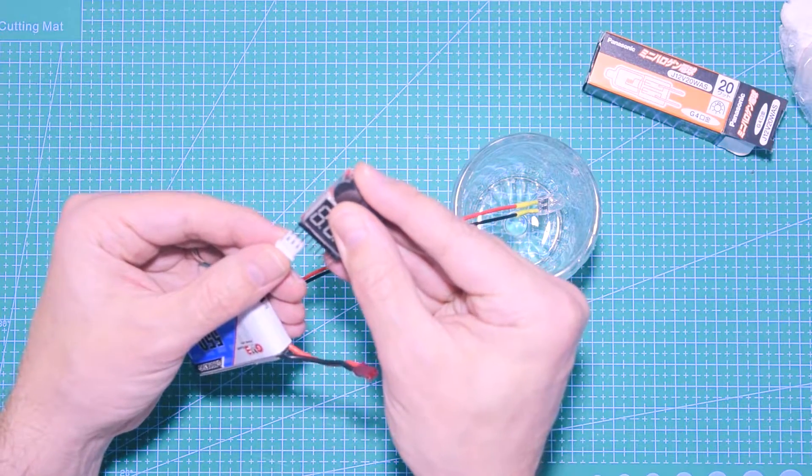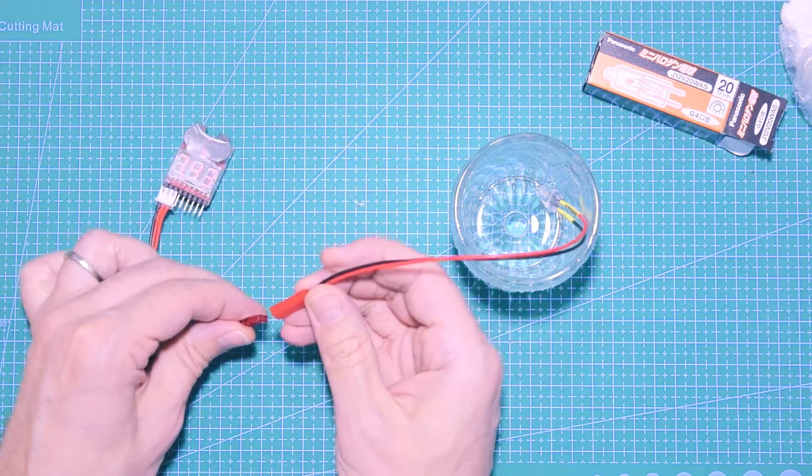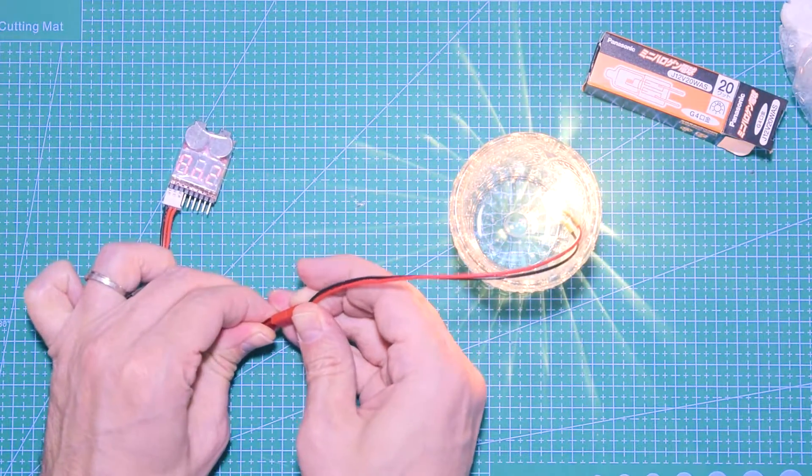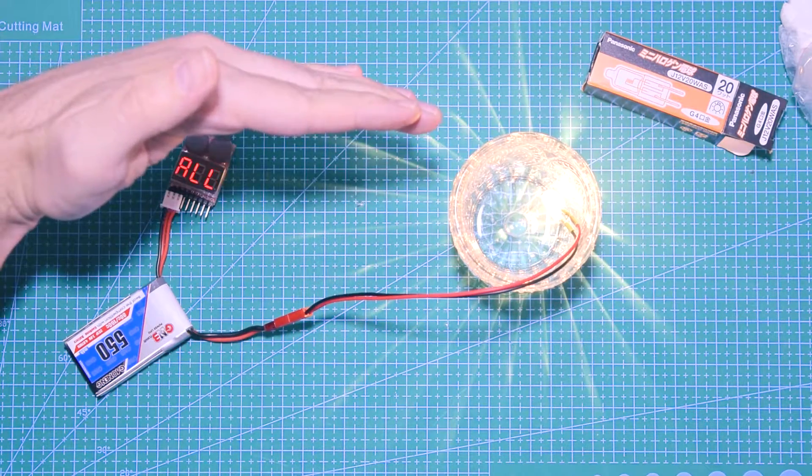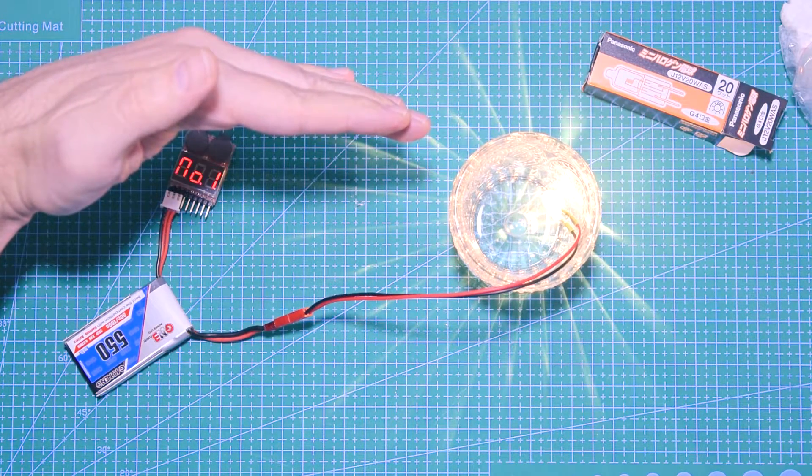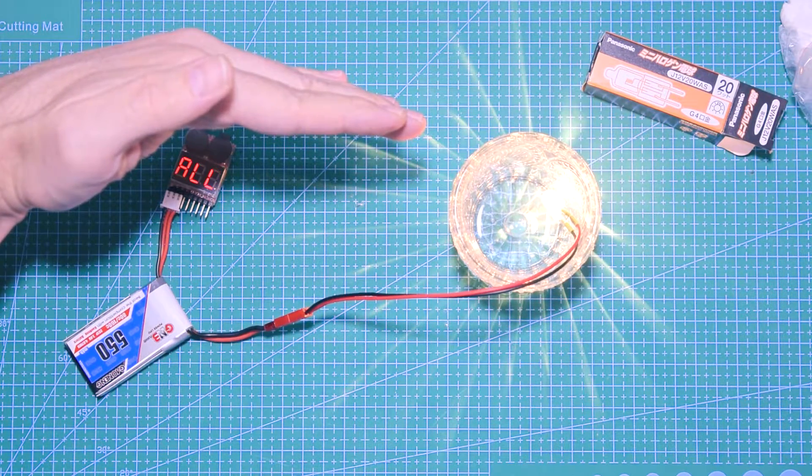You plug your voltage checker and then you connect the battery and basically you wait. It's going through and it's gonna show the voltage and it's gonna go down slowly.